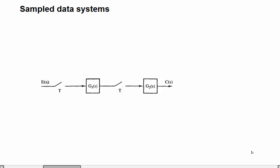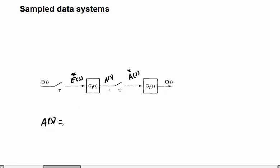After sampling, E(s) is being sampled so we get E*(s). We will name the intermediate signal A*(s) — it is being sampled here. Now, E(s) will be equal to E*(s) times G1(s).